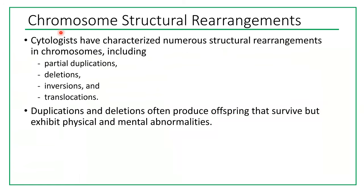Another type of genetic disorder is caused by structural rearrangement of chromosomes. Cytologists have characterized numerous structural rearrangements, including partial duplication, deletion, inversion, and translocation. Duplications and deletions often produce offspring that survive but exhibit physical and mental abnormalities.